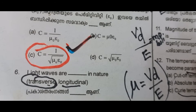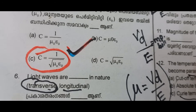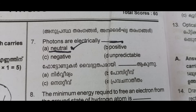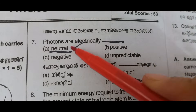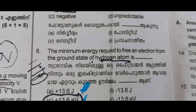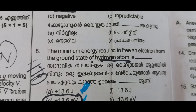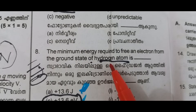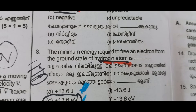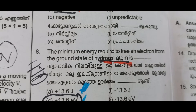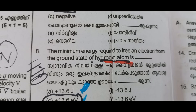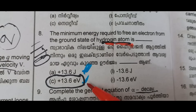Light waves are transverse waves. Photons are electrically neutral. The minimum energy required to free an electron from the ground state of a hydrogen atom is 13.6 electron volts.